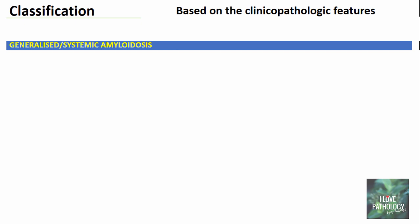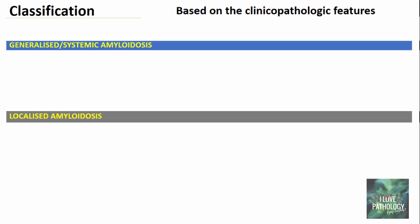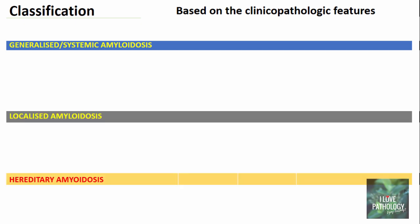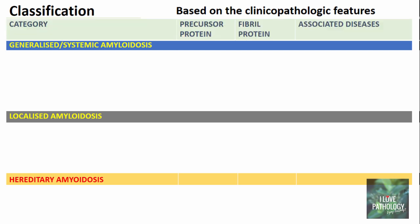Moving on to the classification of amyloidosis, which is based on clinical-pathological features, it is classified into three categories: one, generalized or systemic amyloidosis; two, localized amyloidosis; and three, hereditary amyloidosis. For each category, we will look at the precursor proteins, the fibrillar protein associated with that type, and the various associated diseases.